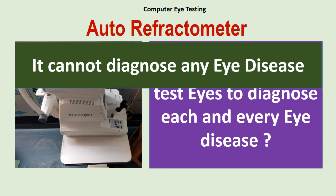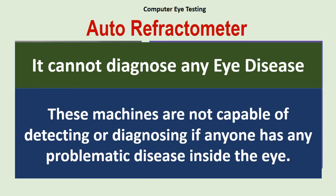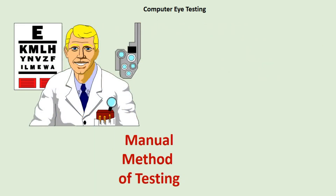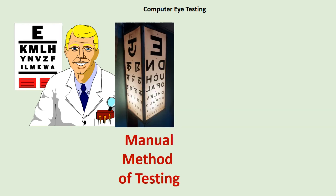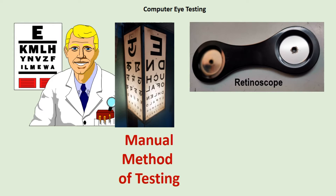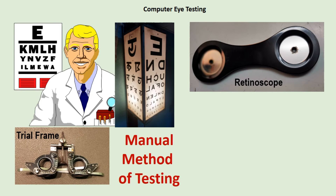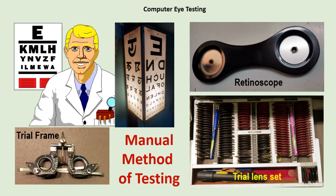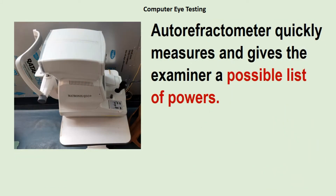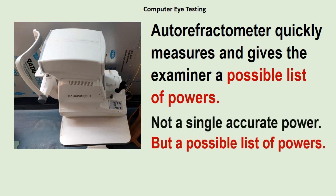The manual method of testing spectacle power is a slow and tedious process. Lenses are placed one after another in front of each eye and checked with a retinoscope until a neutral point is reached, then calculations are made and a possible power is known. This tedious process can be avoided using an auto refractometer, which quickly gives the examiner a possible list of powers — not a single accurate power, but a possible list of powers.